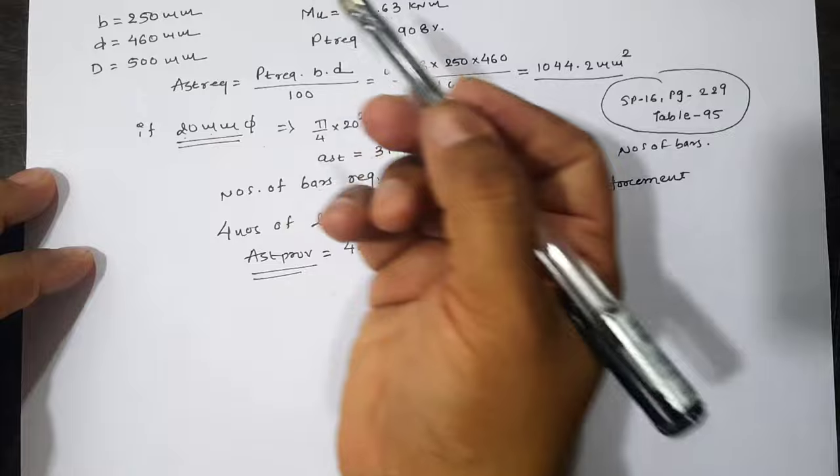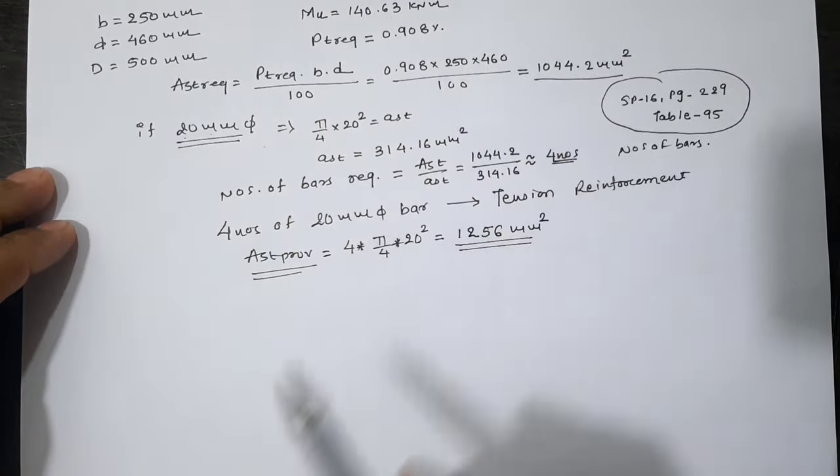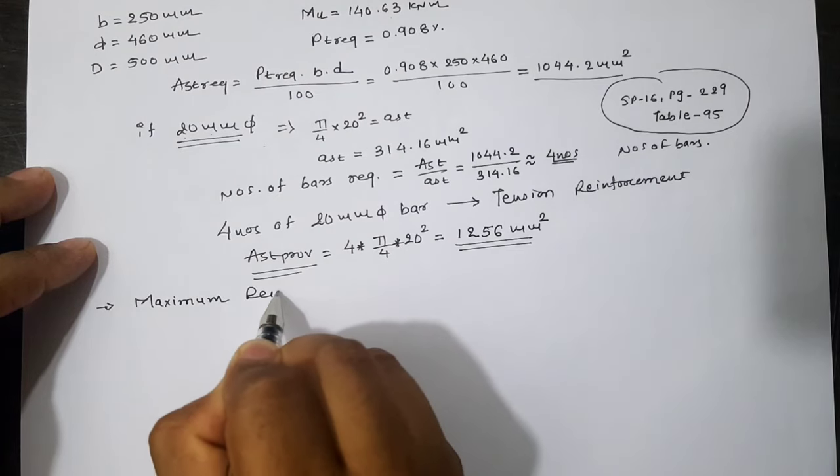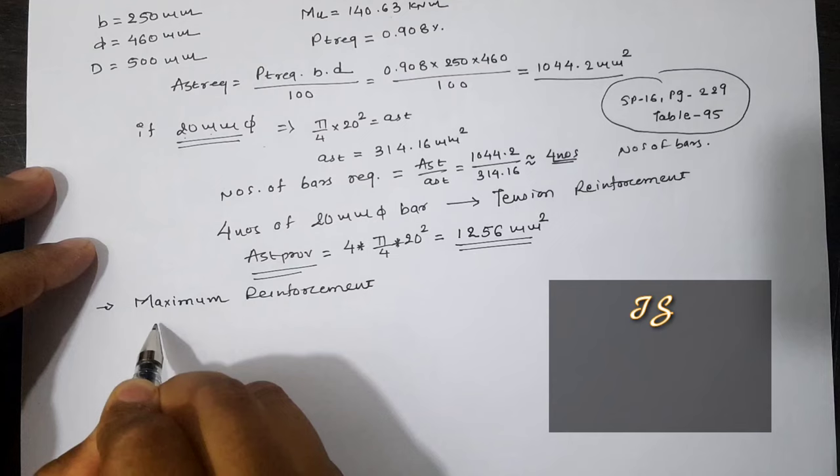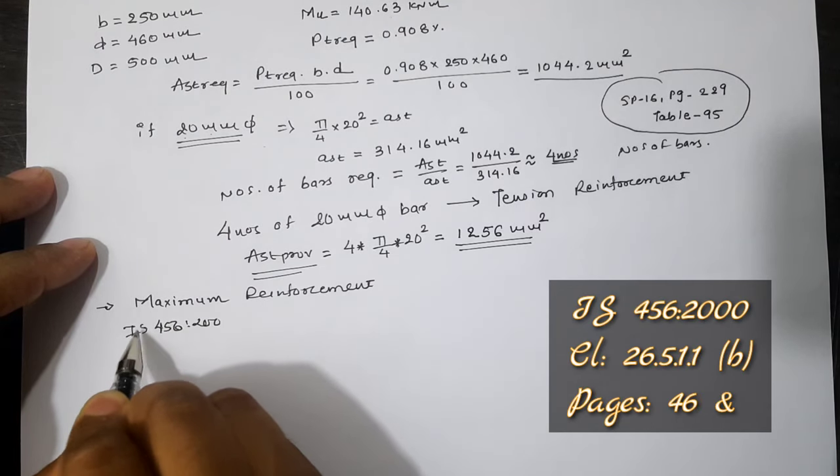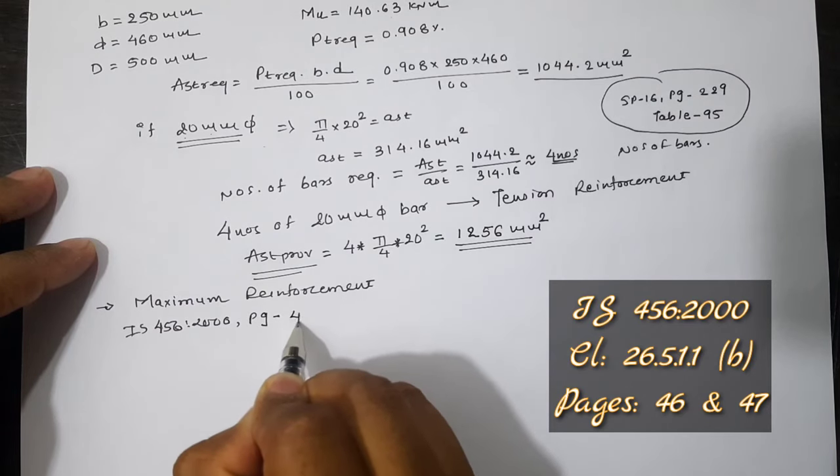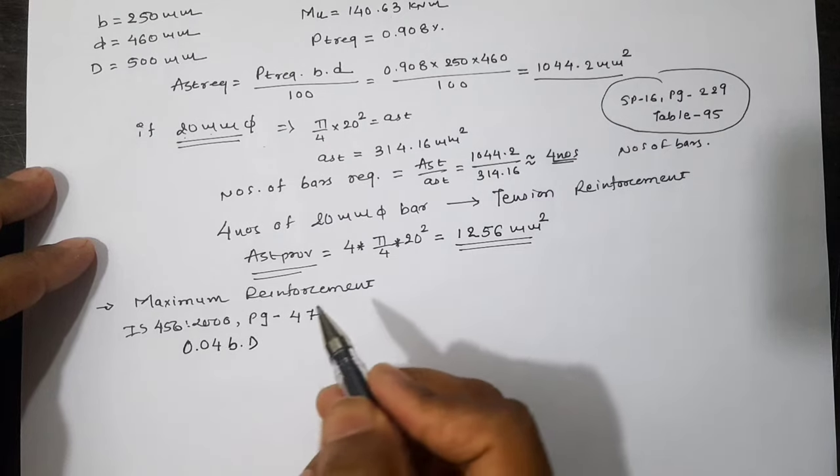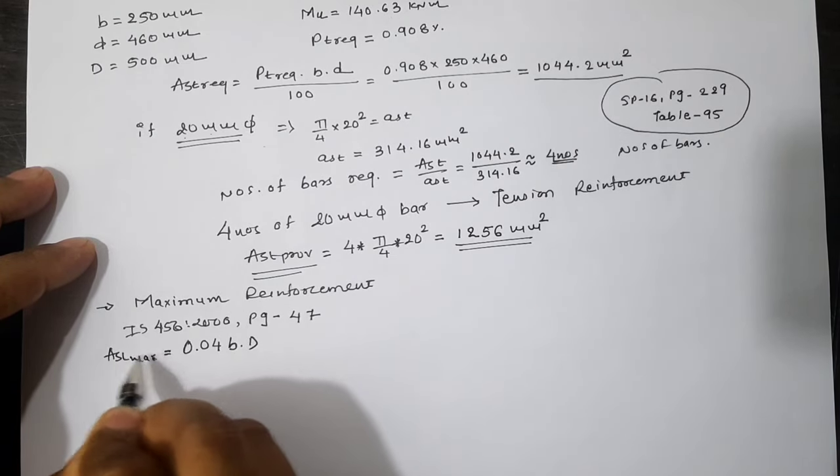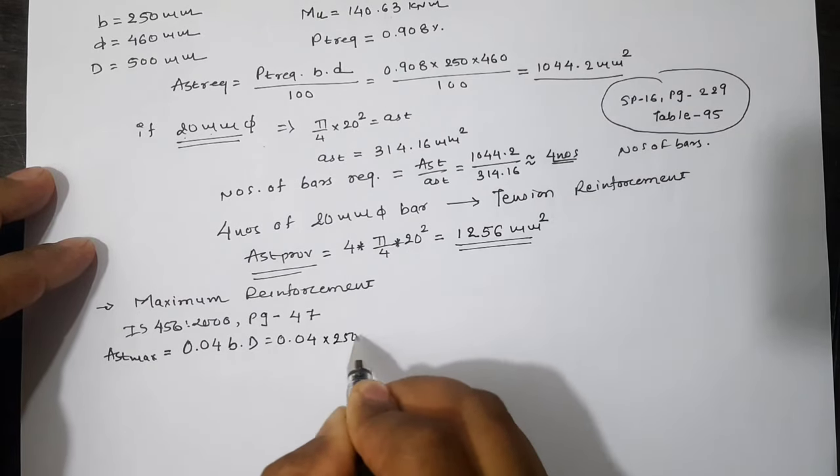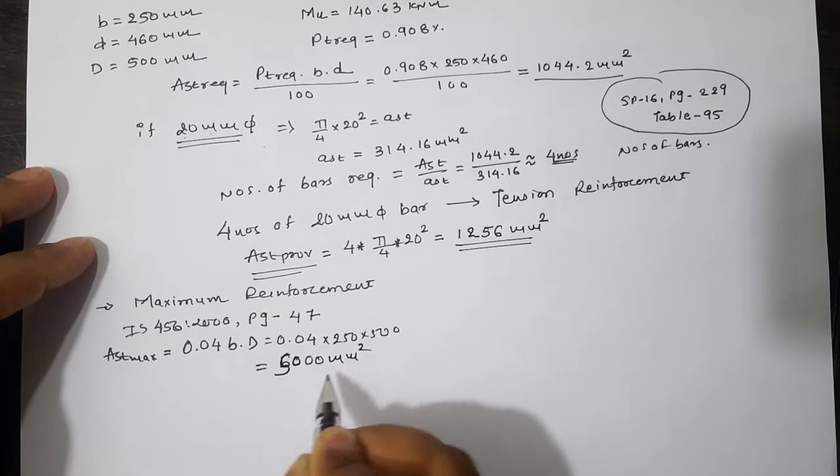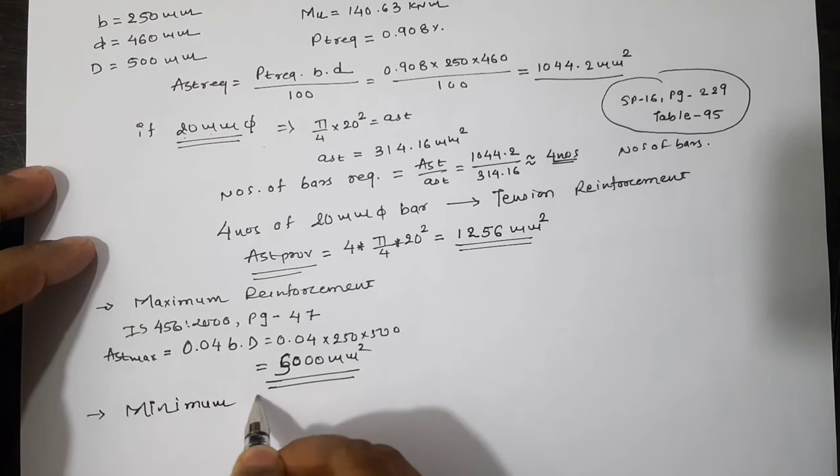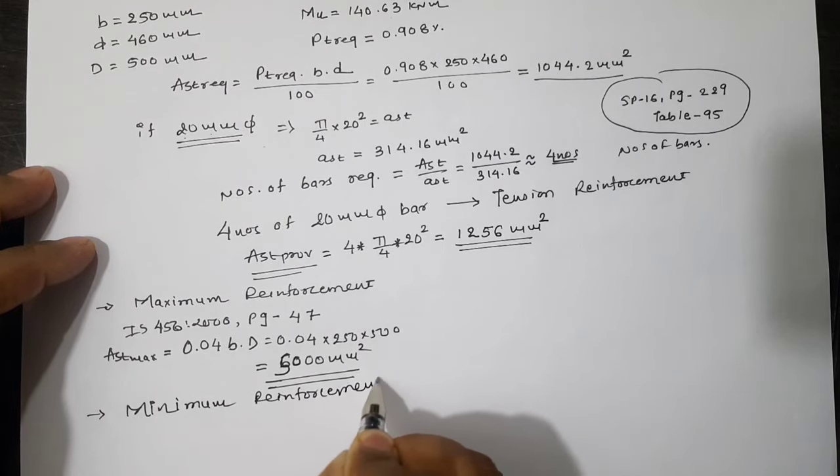We have provided area of steel as 1256 mm² for the cross-section of 250 by 500 mm rectangular beam having moment as 140.63 kN·m. Now let us calculate the maximum reinforcement. According to IS 456:2000 page 47, maximum reinforcement is given as 0.04bd, so AST maximum equals 5000 mm².